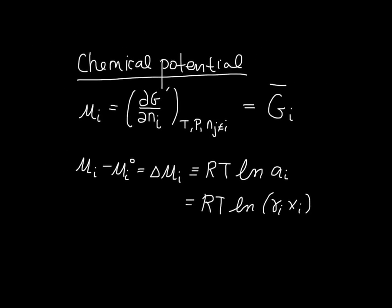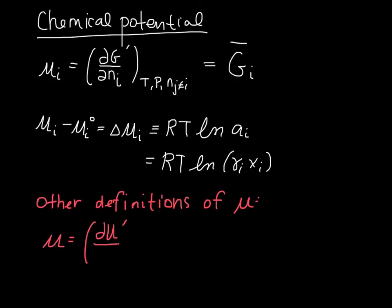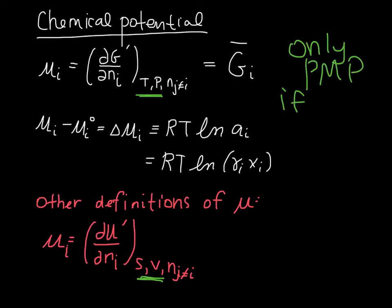Just sort of as a last note here, we can define the chemical potential according to other energy functions. So there are other definitions of the chemical potential that I just want to point out. We will not use them, but we need to know that they exist. We could also define the chemical potential as the change in the internal energy as a function of the number of moles. But in this case, what we have to hold constant because of how U is defined are S and V and the number of moles of other species. So the difference here is what's held constant. And it's only a partial molar property if T and P are constant.